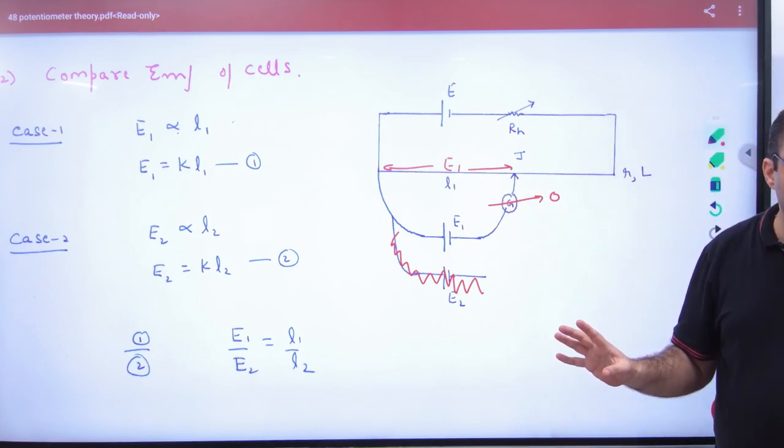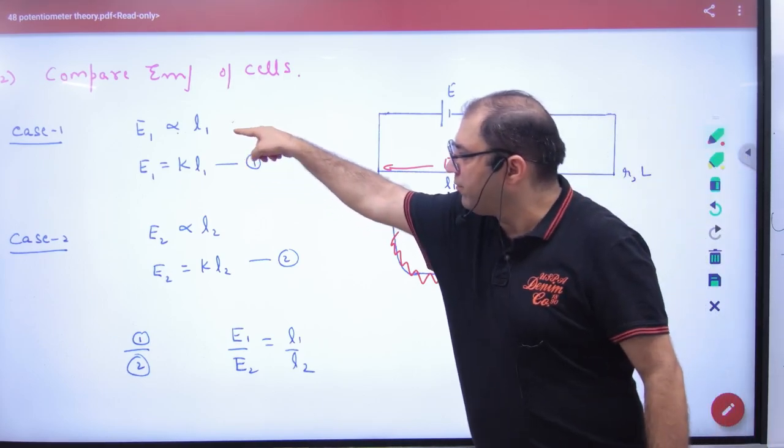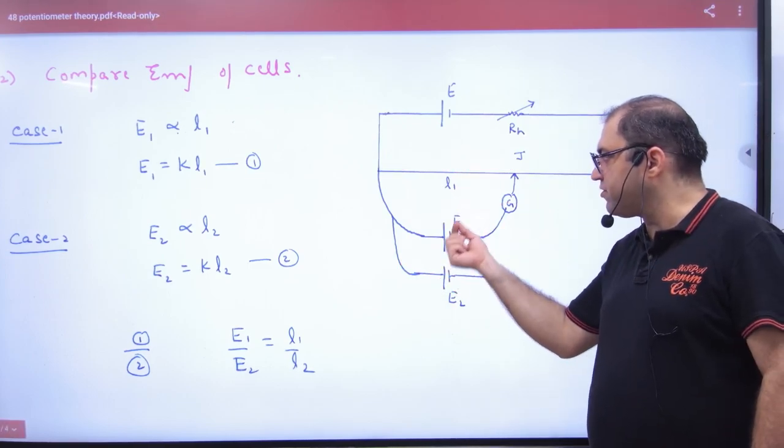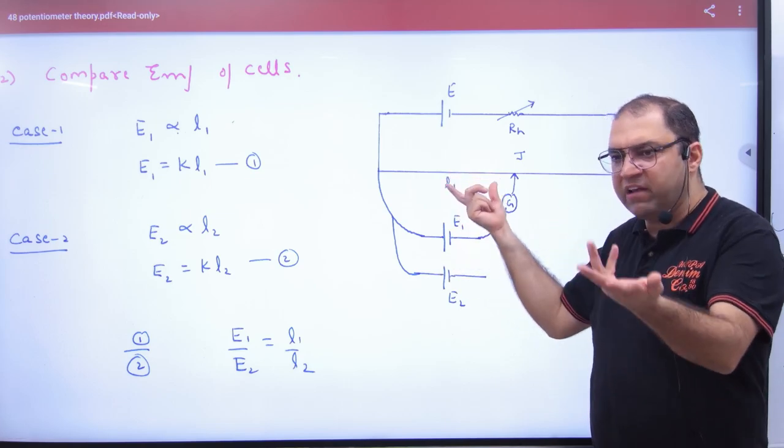So according to the principle of Potentiometer, E1 proportional to L1. Equation number 1 is clear. As far as the potential difference will be higher and the balancing length will be higher, so E1 is also higher.